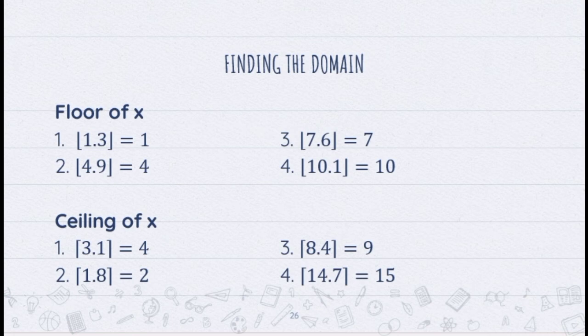While ceiling function, make you think of the nearest integer up. For example, in number 1, 3.1 no matter how close it is to 3, it still goes up to 4.